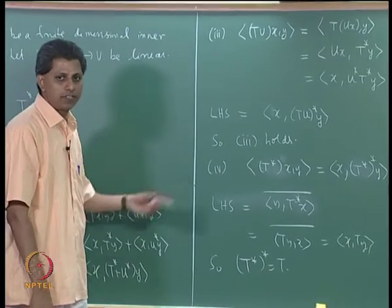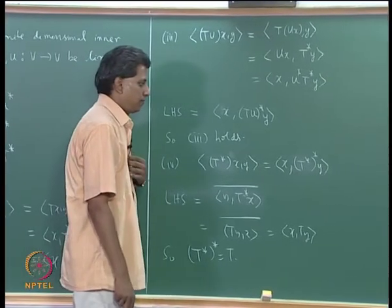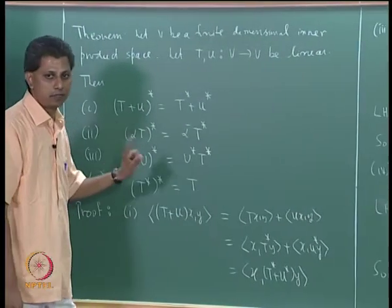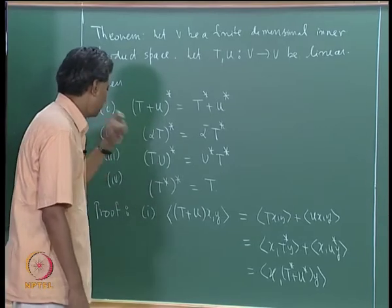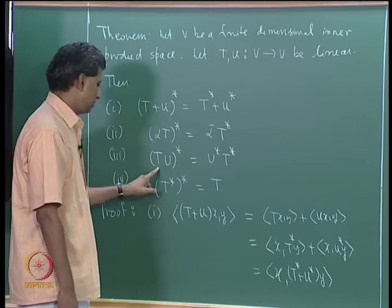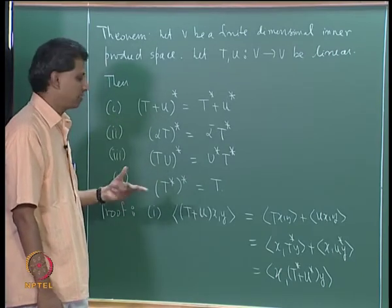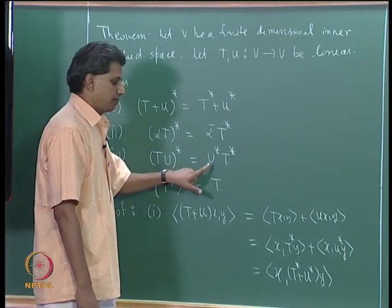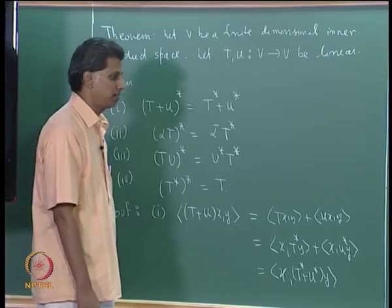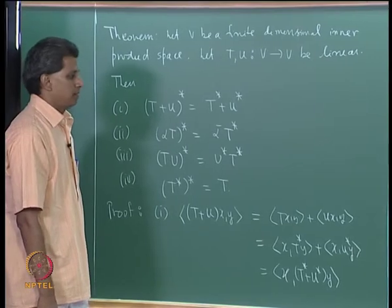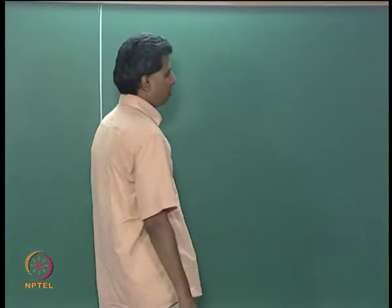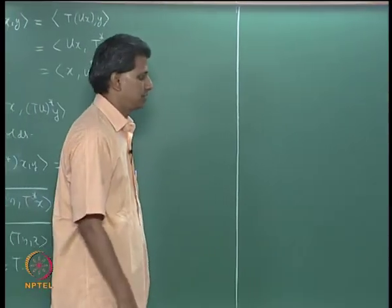You can now see why the adjoint operation is compared to the operation of complex conjugation. For complex numbers z₁ and z₂: (z₁+z₂)̄ = z̄₁+z̄₂; a constant times z₁ gives the conjugate of the constant times z̄₁; complex multiplication is commutative so the reverse order doesn't apply there; and z̄̄ = z, just as T** = T.